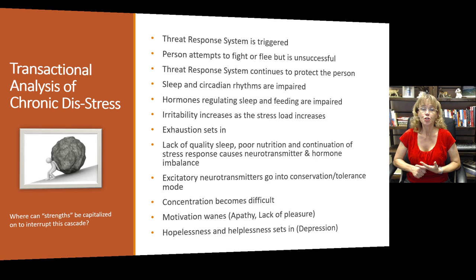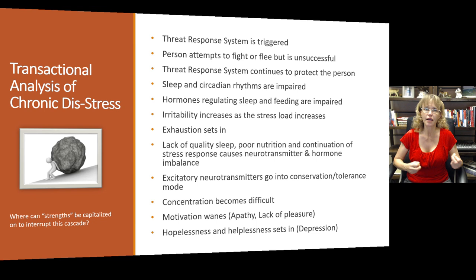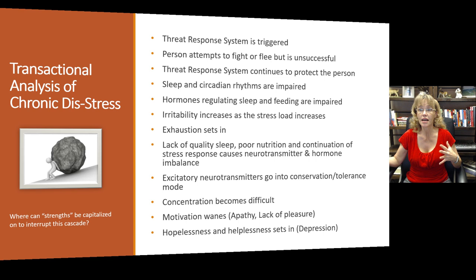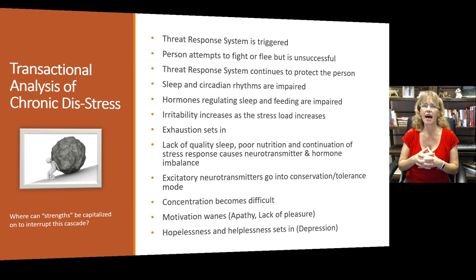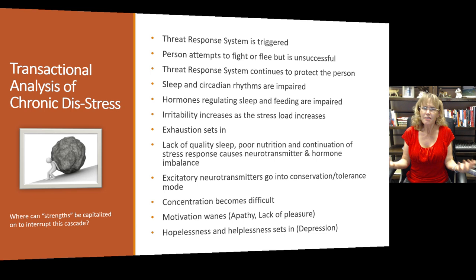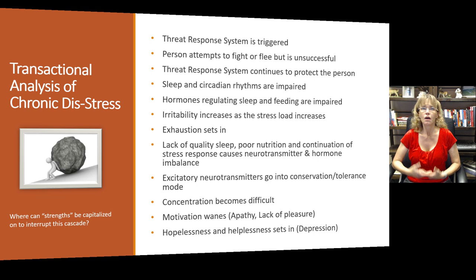When the threat response system is triggered, the person attempts to fight or flee but may be unsuccessful. Some of that could be because they are fighting a stressor that's in their own mind — fighting with their inner critic, fighting with their cognitions. The threat response system stays activated to continue to protect the person. If they have fears of abandonment, or an internal critic telling them they're awful and nobody's going to love them, hearing that regularly is really devastating, and it's going to continue to keep feelings of anxiety and anger activated.